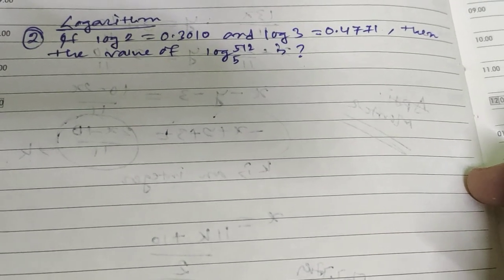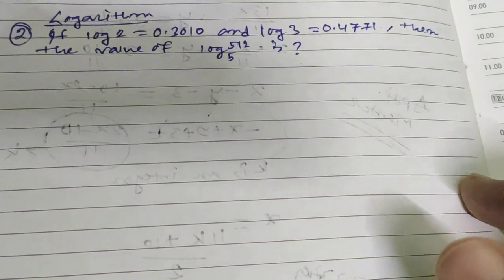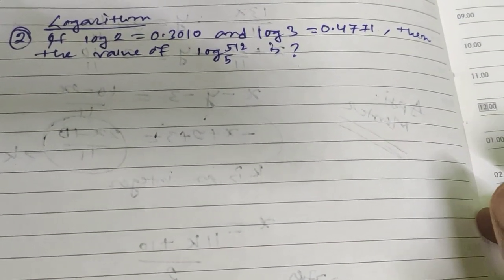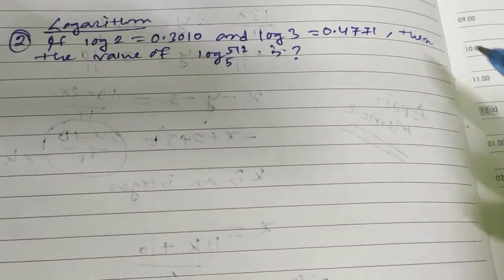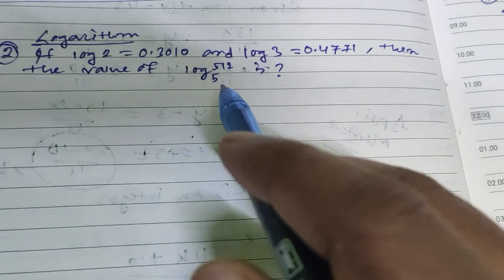Hi everyone, welcome to Aptimaster. This is our second video on logarithms. The question is: if log 2 is 0.3010 and log 3 is 0.4771, then calculate the value of log 512 base 5.